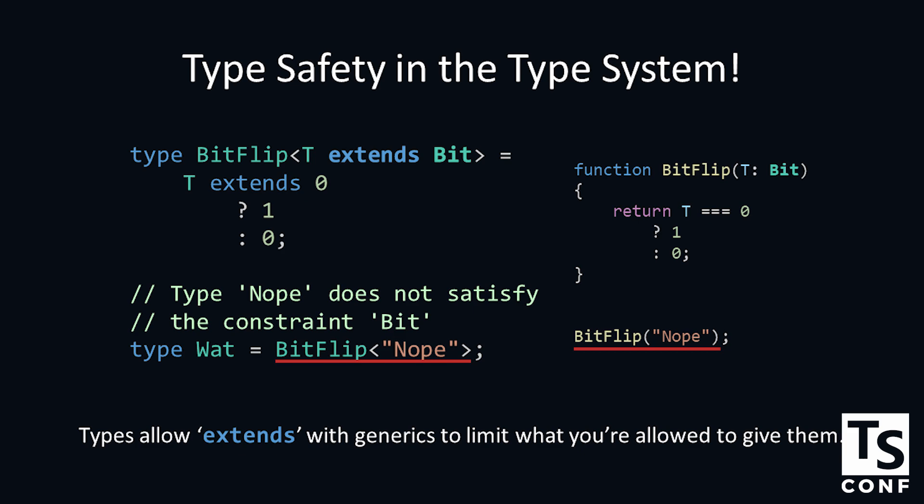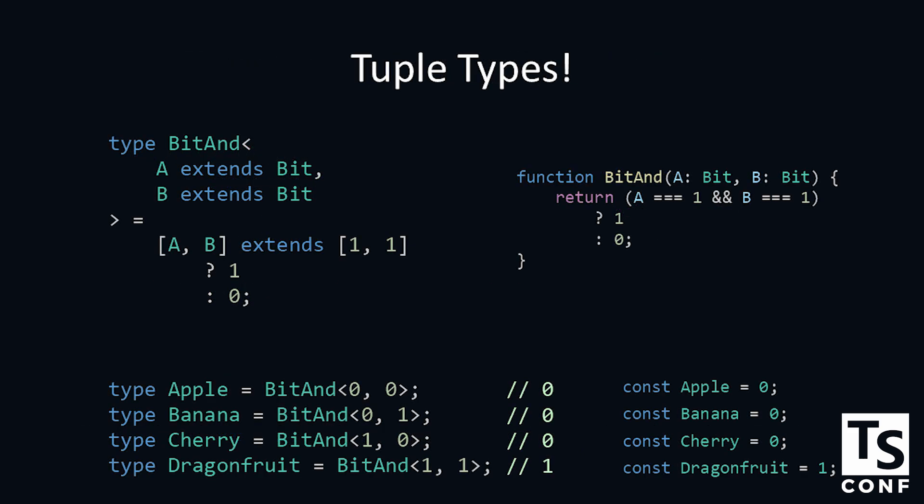Tuple types. A tuple is kind of like an array, but it's more specific. It's a specific length and a specific set of types in it. In this bit AND type, we take in two parameters. We take in an A that's a bit, and we take in a B that's a bit. And if the tuple containing A, B is 1, 1, then we know the result is 1. Otherwise, it's 0. If you're not familiar with binary, this is how bit AND works. AND takes two things and results in 1 if they're both 1, and 0 if there is something that's not a 1 in there.